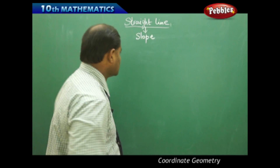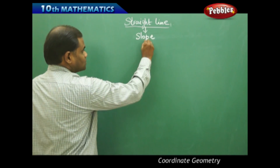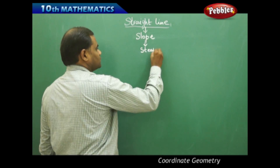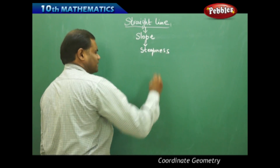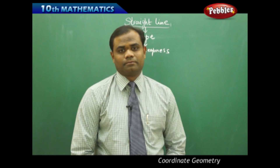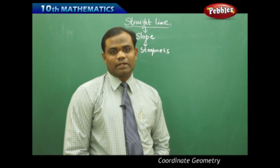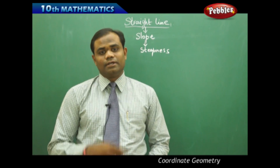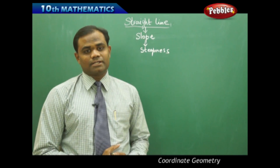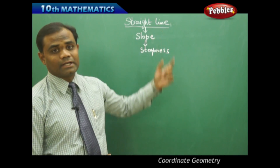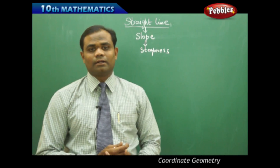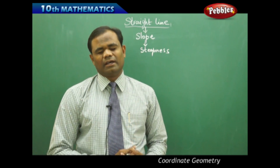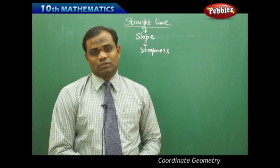Slope in a general sense is understood as steepness, which is the other name for slope in the English dictionary context. So when we say slope, it is the steepness of the given concept. For example, the slope of a straight line is nothing but the steepness of a straight line along the ground.